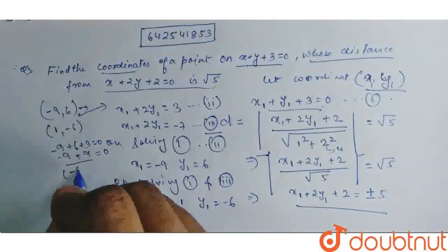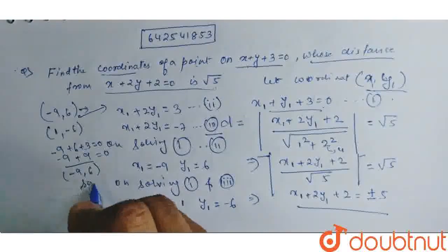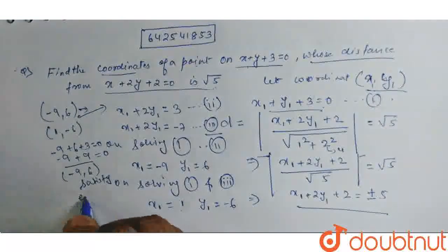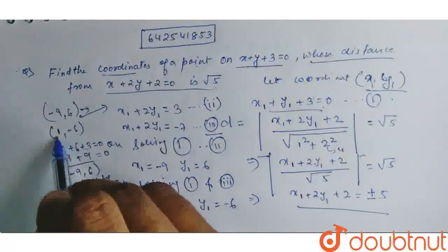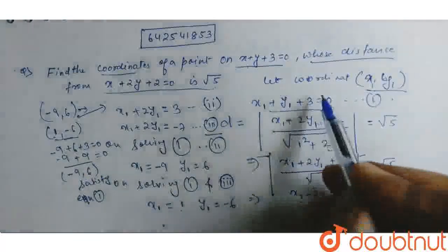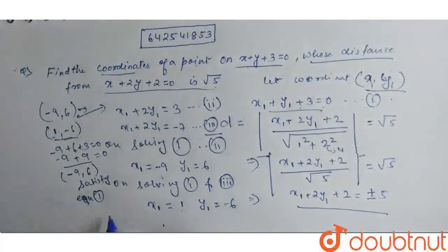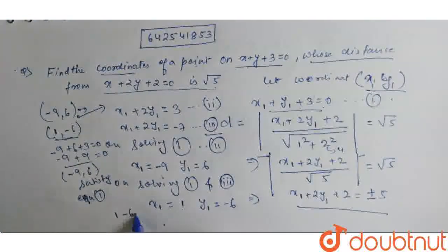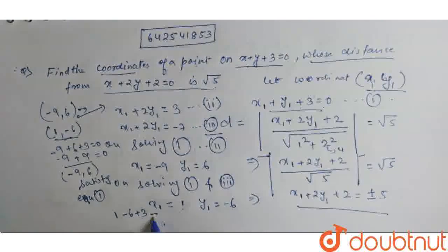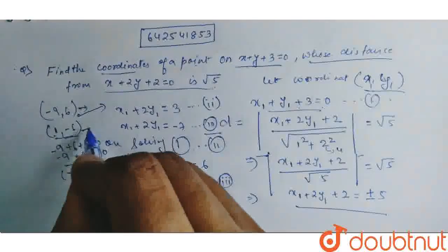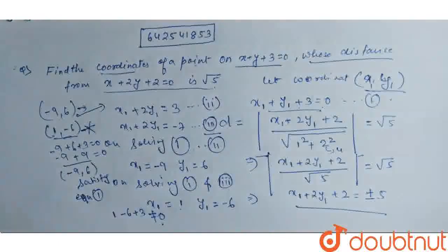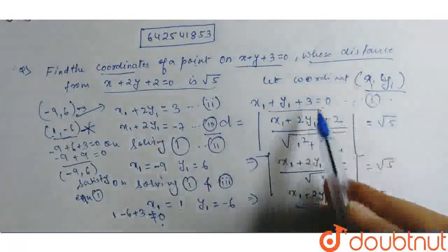Now, minus 9, 6 satisfies equation 1, and on putting this point on this line, we get 1 minus 4 plus 3 not equal to 0. So, this doesn't lie on this line.